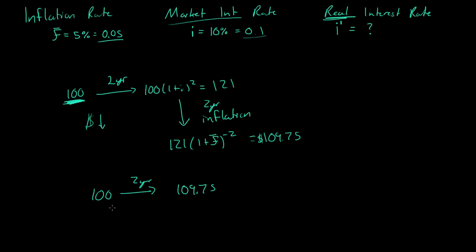So to find out what this is, we take, we solve for i. Remember, so it's $100 times 1 plus i, which we don't know. And it's actually i prime to the power of 2 will give us $109.75. So we'll divide this side by 100. Divide that side by 100. And then we'll take the square root of both sides.